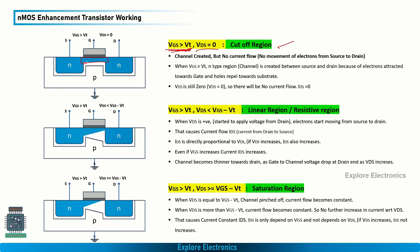This channel is uniformly formed from drain to source. When we start applying VDS, the transistor enters the linear region, and as VDS increases, current IDS also increases. However, because VDS increases, a voltage drop occurs at the drain end, so the channel becomes thinner towards the drain. We must maintain VDS less than VGS minus VT so that the channel still exists at the drain end and current can flow.